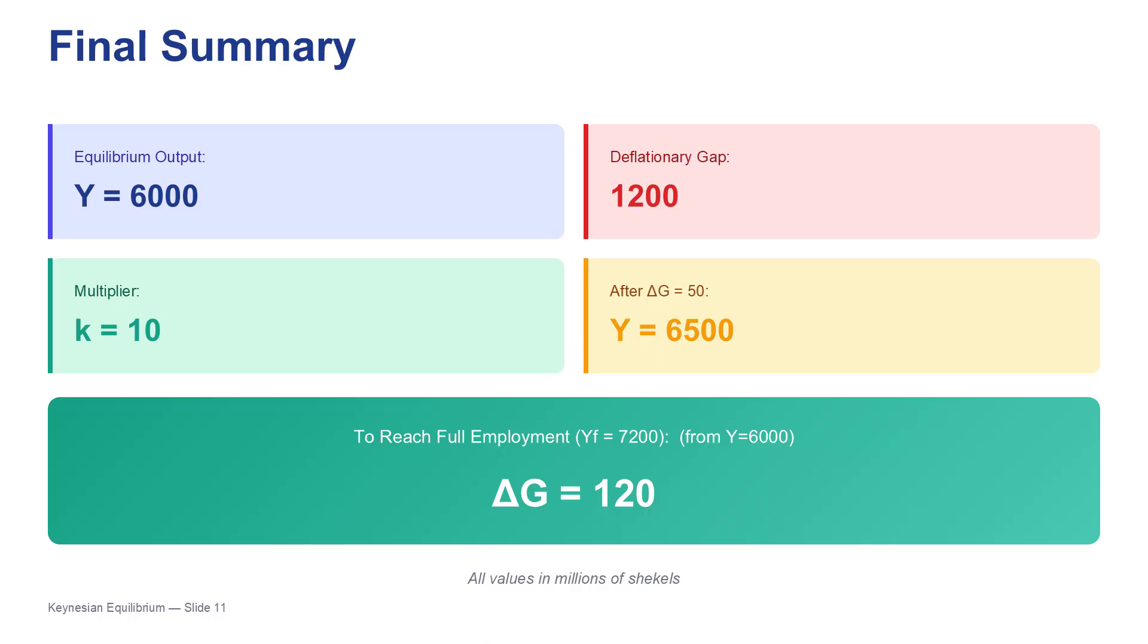But what if they couldn't do that? What if they were legally required to balance their budget? You mean if they had to raise taxes to pay for the new spending? Precisely. What if, to get that delta G of 120, they also had to have a delta T of 120? So they inject 120 through spending, but they immediately pull 120 back out through taxes. Ah, okay. The spending's expansionary, but the tax hike is contractionary. They'd be working against each other. They would. So that leaves you with a final thought to mull over. If the government has to use a balanced budget approach, would that 120 million shekel injection still be enough to get the economy to the 7,200 full employment target? Or would the effect of the balanced budget multiplier leave them falling short? A fascinating problem. It adds a whole new layer of complexity to what seemed like a straightforward solution.